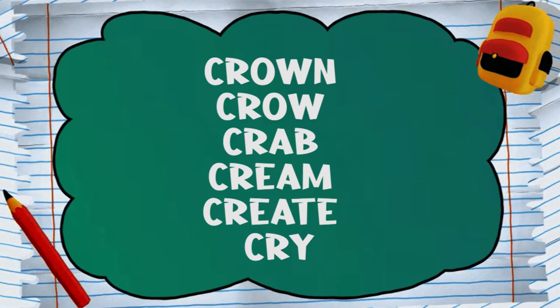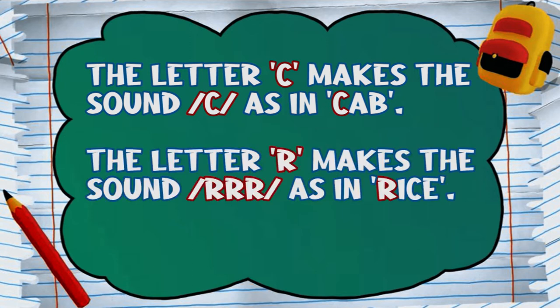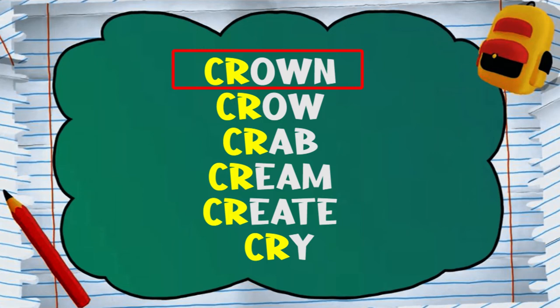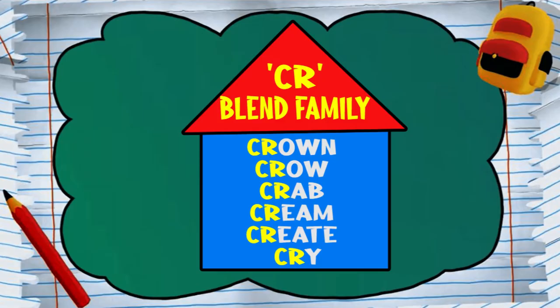Now let's look at this next list of words. What is common about them? Yes, the CR beginning. Another commonly used blend is CR. The letter C makes the sound C as in cab, and the letter R makes the sound R as in rice. Let's say the words: crown, crow, crab, cream, create, cry. Did we hear both sounds? We heard both sounds clearly. So these words belong to the CR blend family.